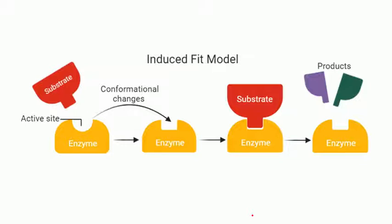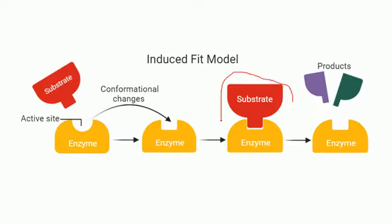Here is a simple diagram to explain the induced fit model. We have a substrate and an enzyme. You can see that the shape of the active site is roughly circular while the substrate is a different shape. In the lock-and-key model, this substrate cannot bind with the enzyme. However, according to the induced fit model, when the substrate approaches the enzyme, the active site changes its shape to become suitable so that the substrate can bind.